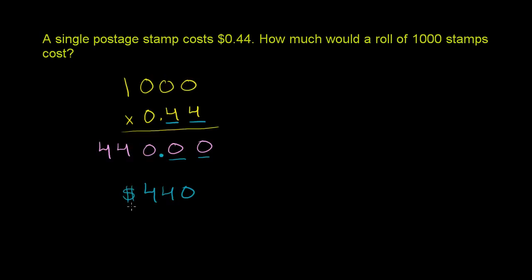Or it's going to cost us $440 to buy 1,000 stamps. Which makes sense, because 0.44, think about it, it's a little bit less than half. 0.5 would be half. So this is a little bit less than half of $1,000. Half would be 500. This is a little bit less.